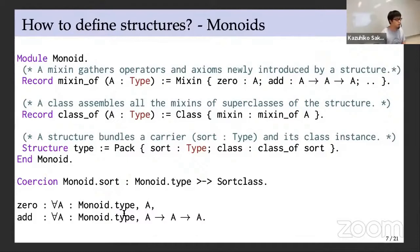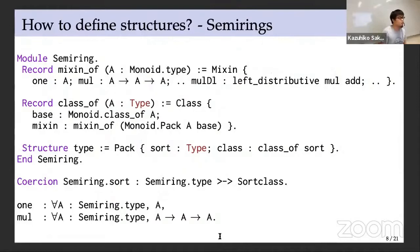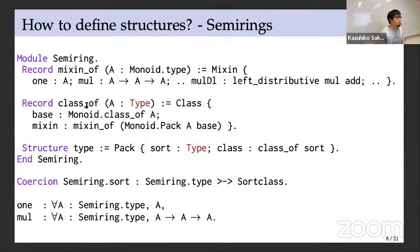Here we define the semiring structure. Its mixin has one, multiplication, and their axioms, including distributivity of multiplication over addition. Since we need to mention addition — a monoid operator — we take A of monoid type rather than type. The class record assembles the semiring mixin and the monoid class record. The type record bundles the carrier with its class instance, and we similarly declare the sort projection as a coercion and lift the operators.